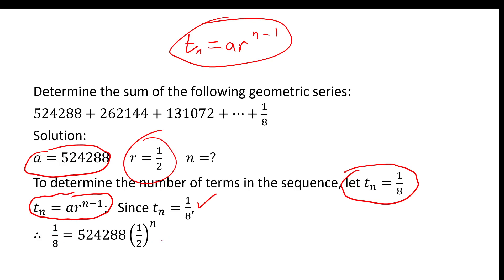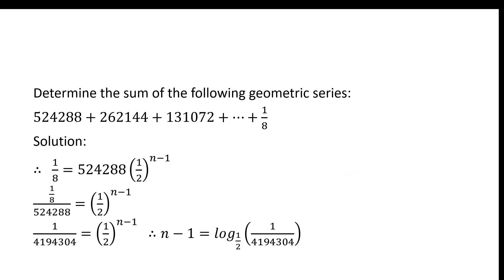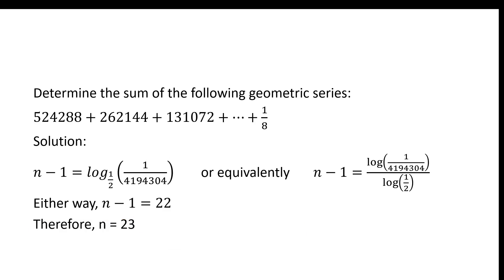So in other words, we know that 1 eighth equals 524,288 times 1 half to the exponent N. We can divide both sides now by 524,288, and we end up with 1 over 4,194,304 equals 1 half to the exponent N minus 1. We recall our work with logarithms from earlier. N minus 1 will equal the log base 1 half of 1 over 4,194,304. And if we have a calculator that can handle logs with base of a half, we can use that. If we don't, we can use what you'll learn in grade 12 is called the change of base formula. N minus 1 equals the log of 1 over 4,194,304 divided by the log of one half. Either way we do it, we see that N minus 1 is 22, or in other words, N is 23.